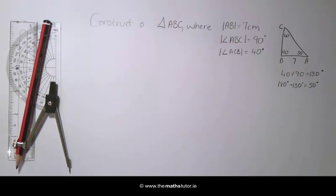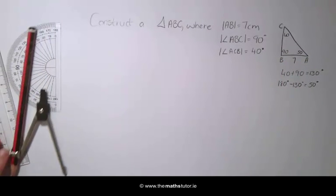Now we can start by drawing our horizontal line AB which is 7cm.